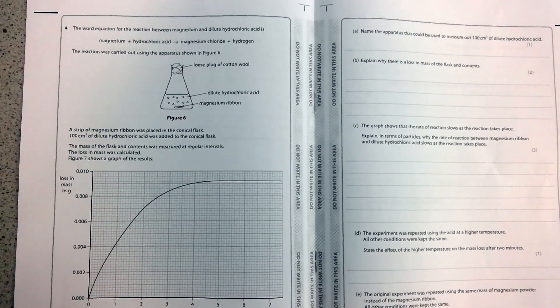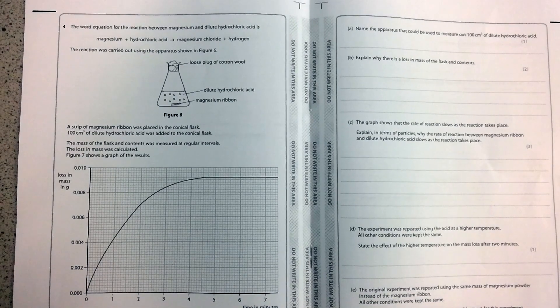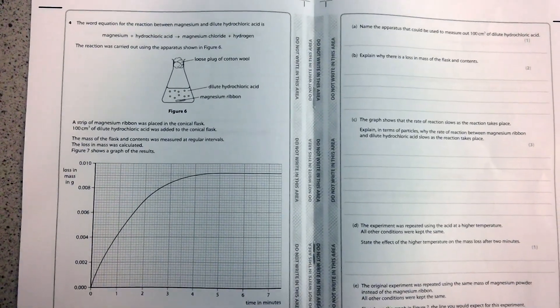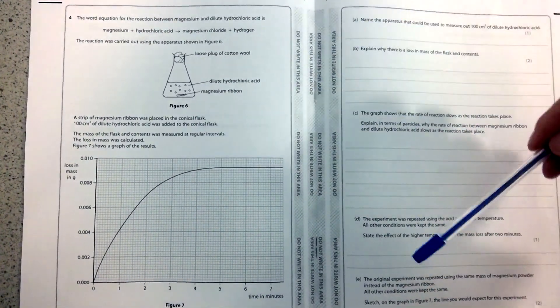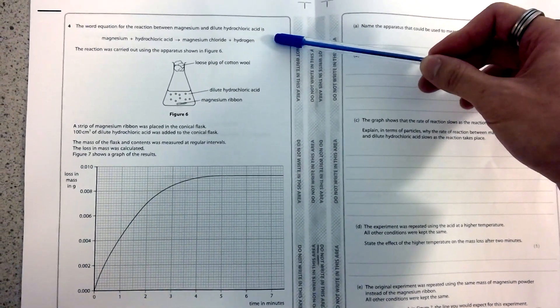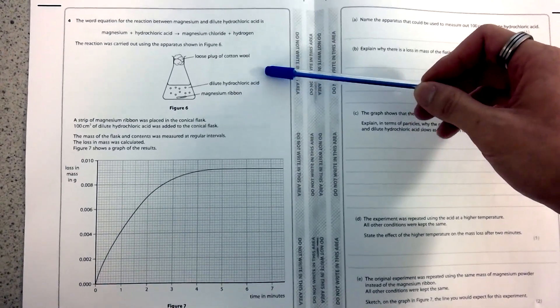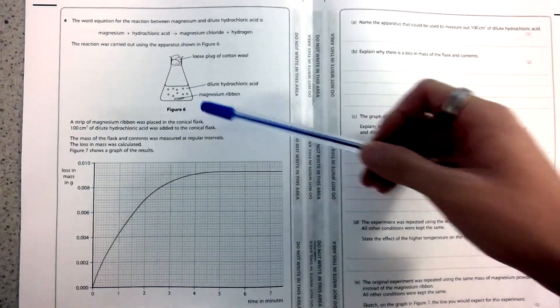Right, so this is a GCSE chemistry question where you have to explain why the speed or rate of a reaction and the masses change. Don't be tempted to avoid reading all the information that's given to you because that will help you with the following questions. For example, they give you the word equation, so you don't need to think about what reaction is happening. And they also provide you with a diagram of the apparatus as well as helpful hints as to what you would see when the reaction is happening.